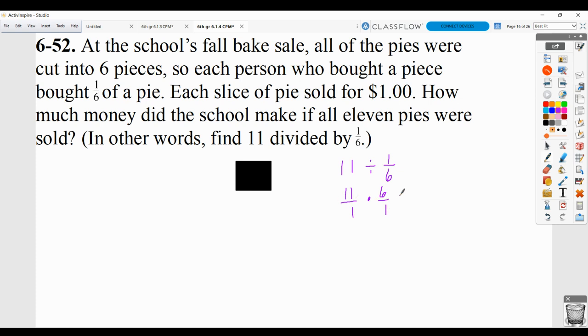And then, now you're set up for multiplication, you multiply as usual. So you get 66 over 1, or 66. So, you can either show it with a diagram, or you can show it with your division using your keep, change, flip technique.